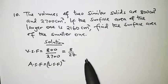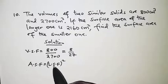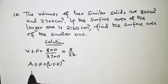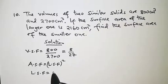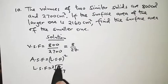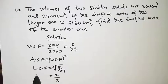From the volume scale factor we get the linear scale factor, which is just the cube root of the volume scale factor. This gives us the cube root of 8, which is 2, over the cube root of 27, which is 3. So the linear scale factor is 2 over 3.